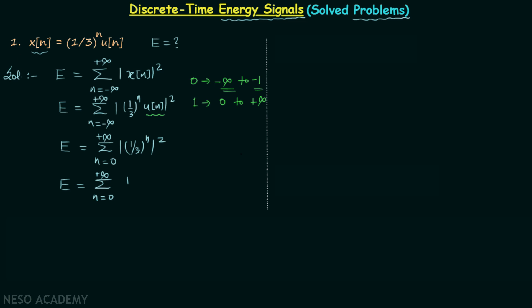This gives us the total energy equal to a series starting at n=0: the first term is 1, then 1/9, then (1/9)^2, and so on.